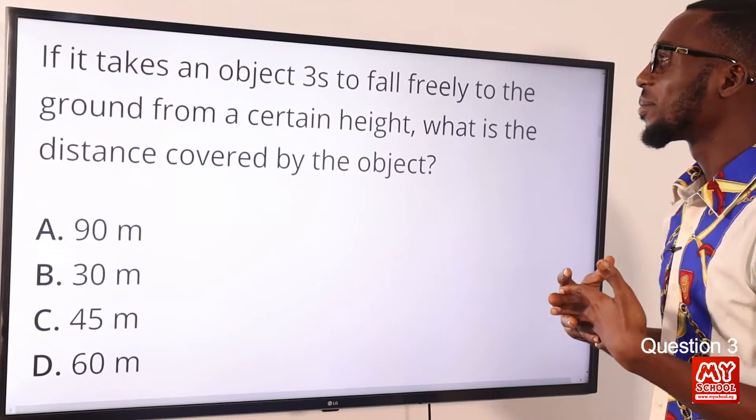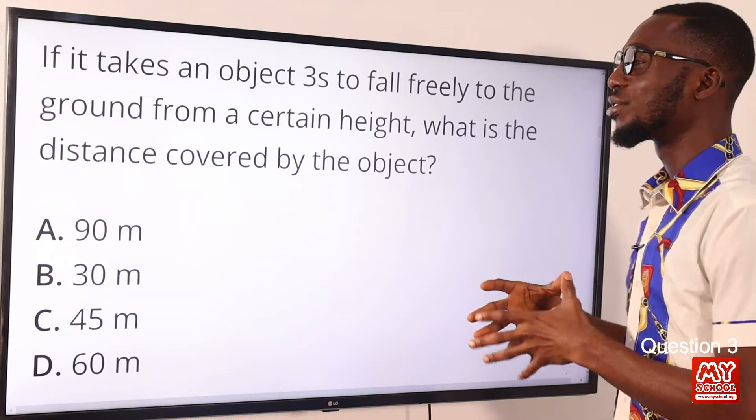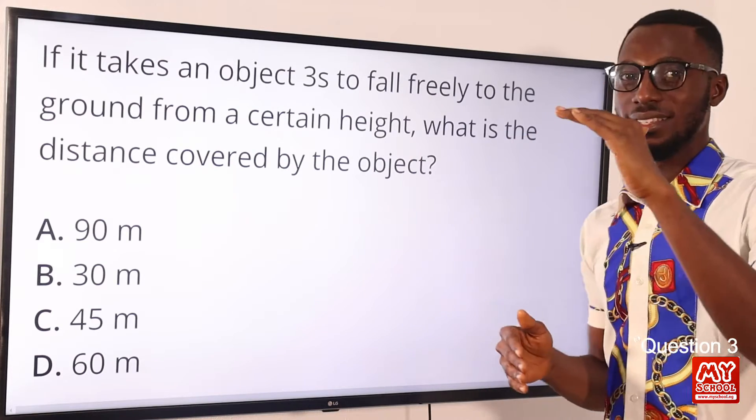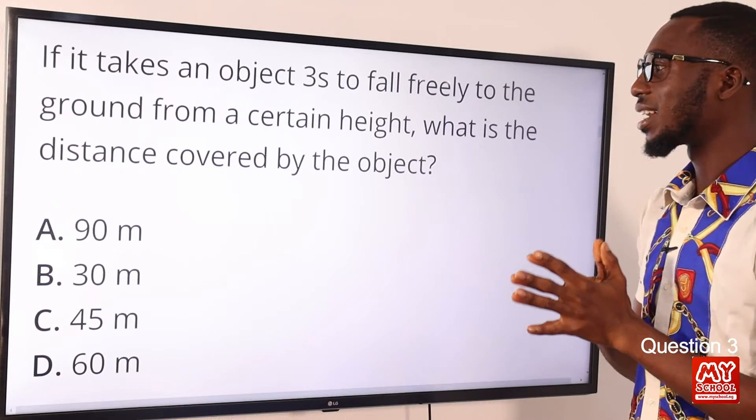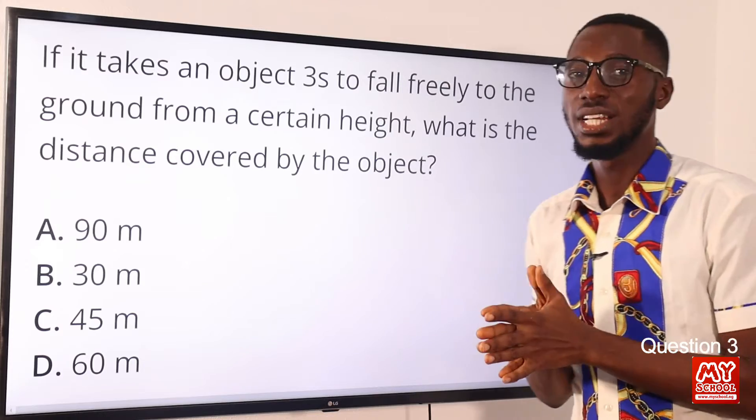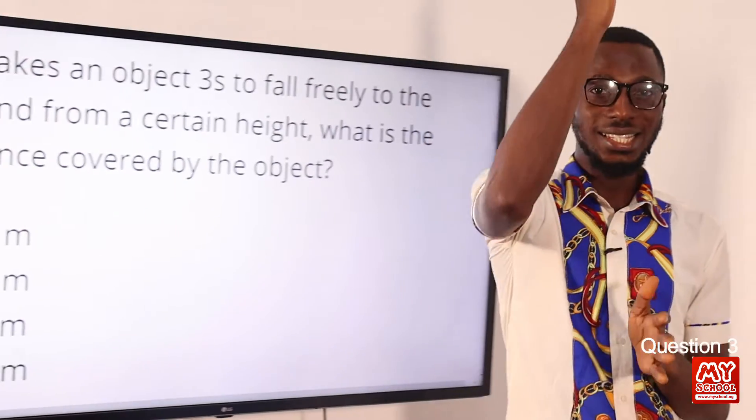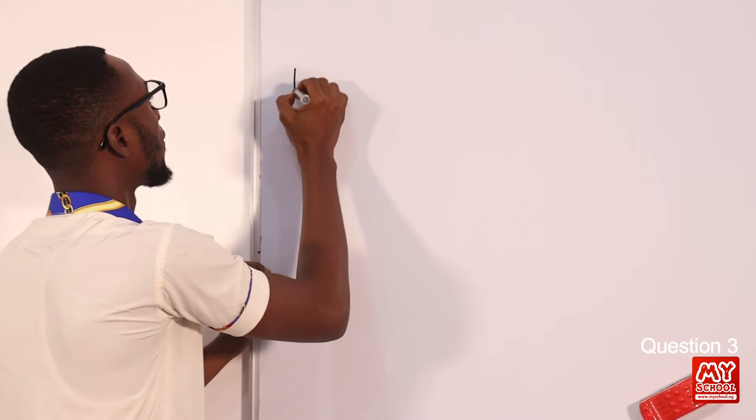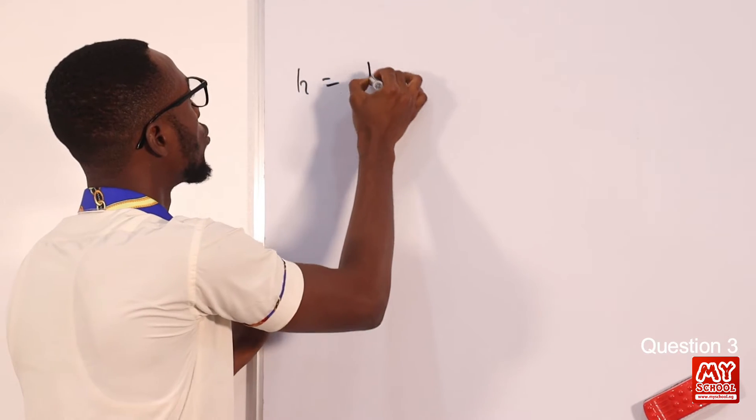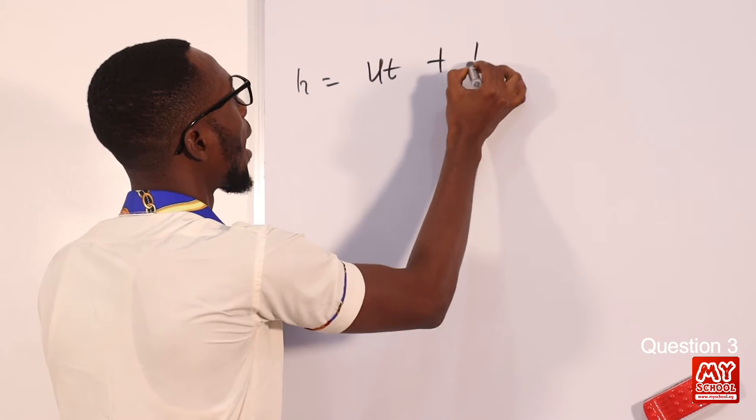Question 3. If it takes an object 3 seconds to fall freely to the ground from a certain height, what is the distance covered by the object? So we are talking about vertical distance, upwards or downwards. So instead of we saying S equals UT plus 1/2 AT squared, we are going to change the S to H for acceleration due to gravity. We have GT squared.